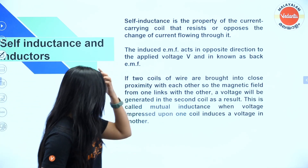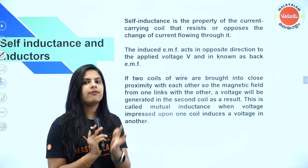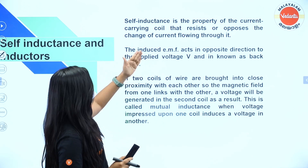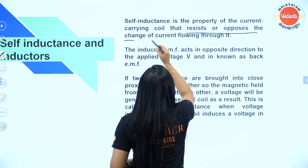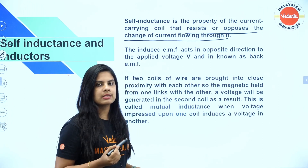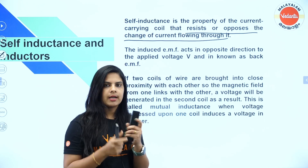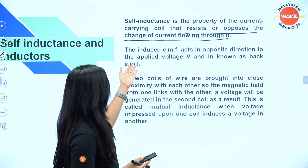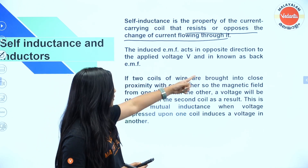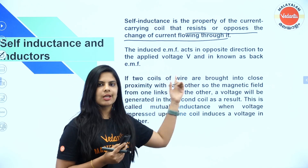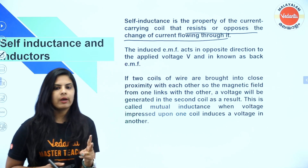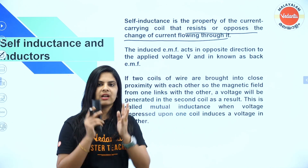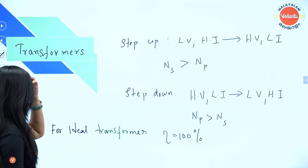Self-inductance is the property of a current-carrying coil that resists or opposes the change in current flowing through it. Mutual inductance involves two coils — one coil induces an effect in the other. The induced EMF acts in the opposite direction to the applied voltage.